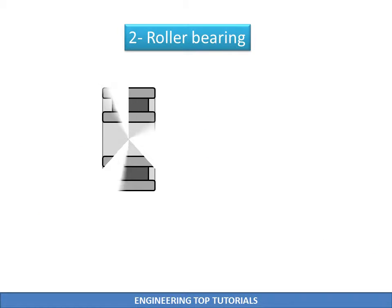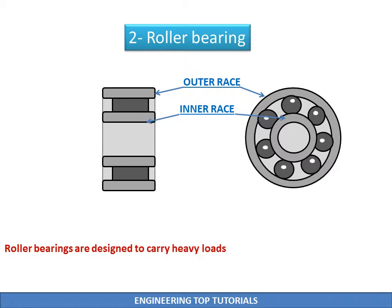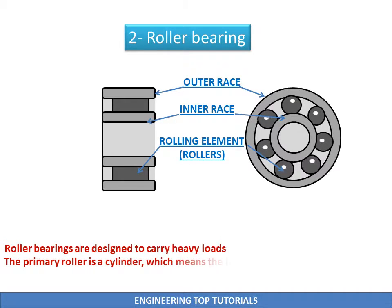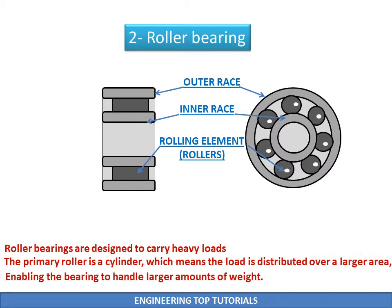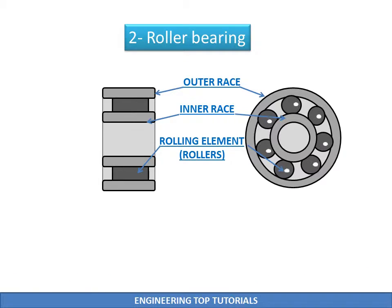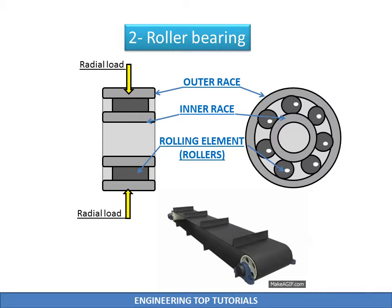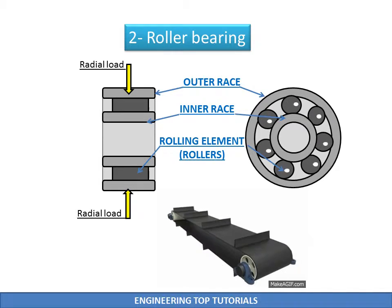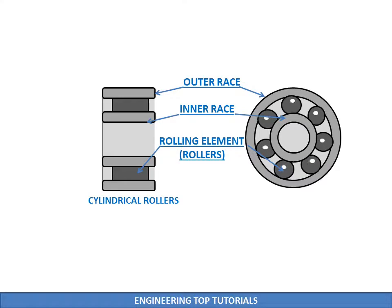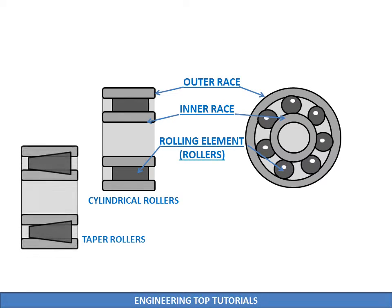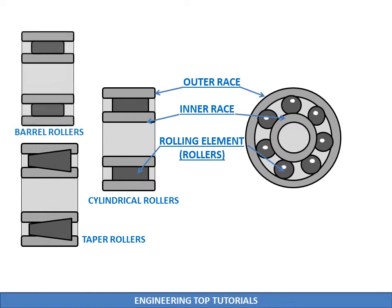Roller bearings are designed to carry heavy loads. The primary roller is a cylinder, which means the load is distributed over a large area, enabling the bearing to handle a larger amount of weight. Roller bearings are used in applications where a large load is to be borne — for example, in conveyor belts where rollers must bear heavy radial loads. This structure, however, means the bearing can handle primary radial loads but is not suited to thrust loads. Roller bearings are further classified based on the type of rolling element used as cylindrical, taper, and barrel type.